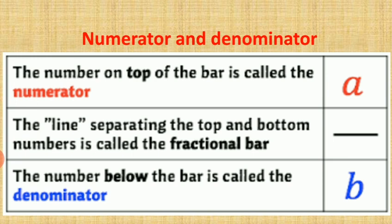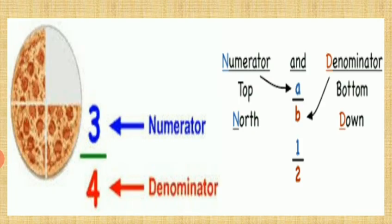Here you can see the picture of a pizza. The pizza is divided into four parts, so the total number of parts are four. The pizza is your whole. The total number of parts we write as the denominator, and the number of parts shaded we write as the numerator. Here three parts are shaded, so numerator is three, and total parts are four, so denominator is four. Numerator stays on top and denominator stays at the bottom.